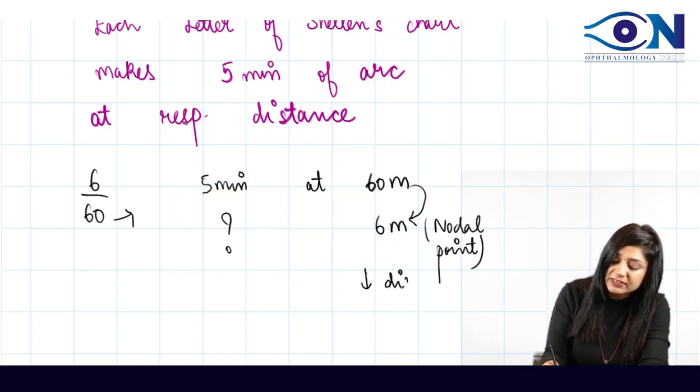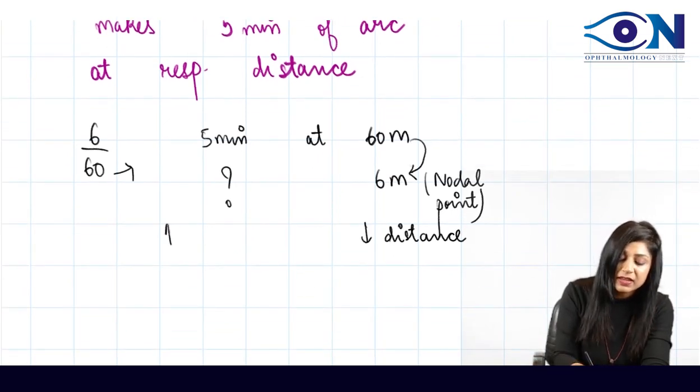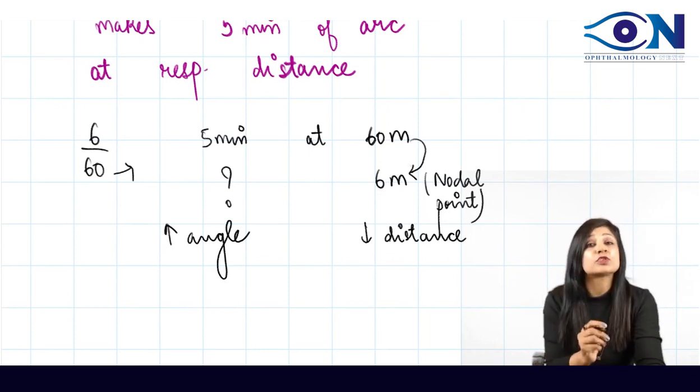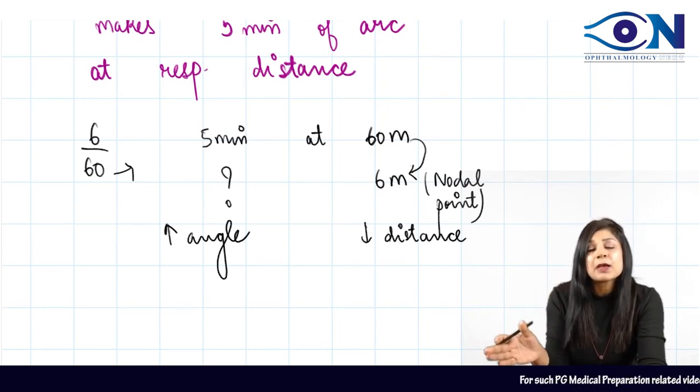That is why the patient was not able to see from the distance but can see from near. How much is the distance decreasing? 60 upon 6 is 10 times.